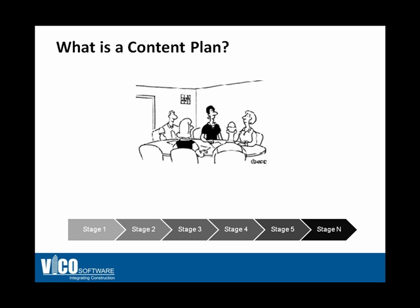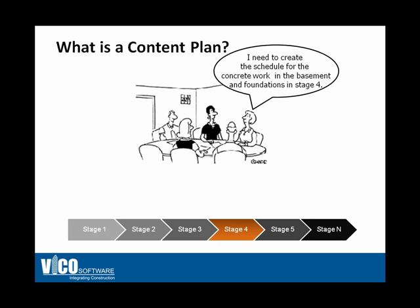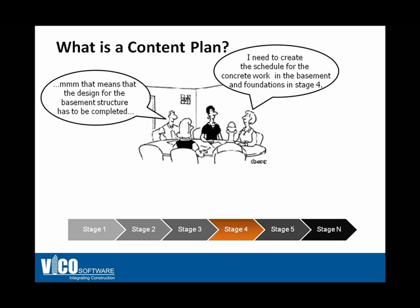So what exactly is a content plan? The good news is it is something that you already do today — the content plan simply formalizes that. It is a document that captures the requirements of information that needs to be available at a certain point in time during the project. For example, the team is discussing the requirements for stage 4. The scheduler identified the need to create the schedule for the concrete work in the basement at this stage, and the architect or structural engineer realizes that the design for the basement structure needs to be completed at that point — otherwise the schedule cannot be created.